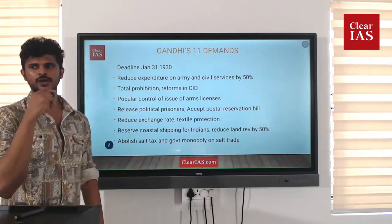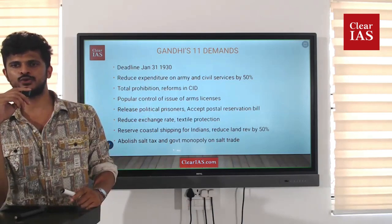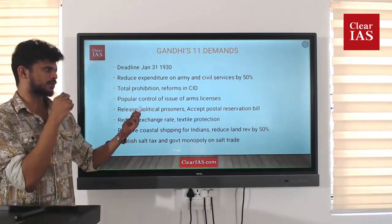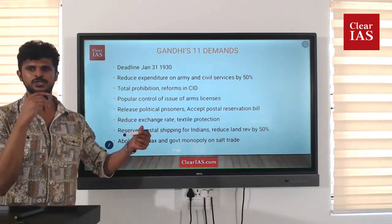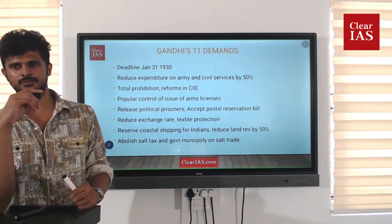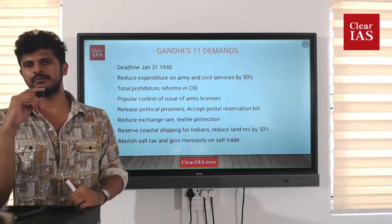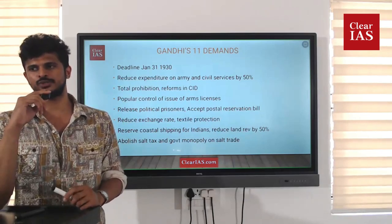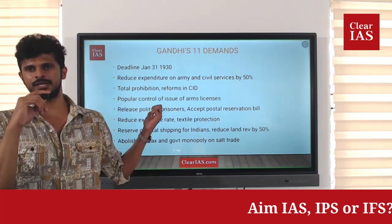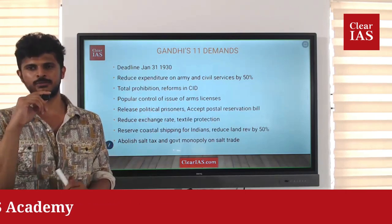He demanded popular control of the issue of arms licenses. He mentioned the Arms Act of 1878, under which Indians were no longer allowed to carry arms without licenses or to sell or manufacture arms. Gandhiji demanded that arms licenses should be issued not by the British government, but by popular legislatures and ministers responsible to those legislatures. He argued that taking away arms from Indians had made them unmanly and unable to challenge authority when it was abused.